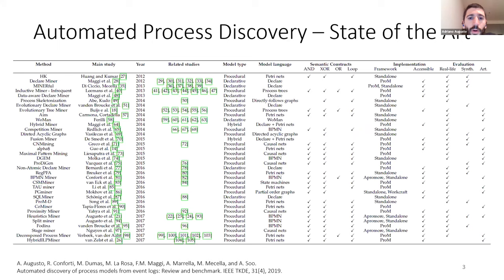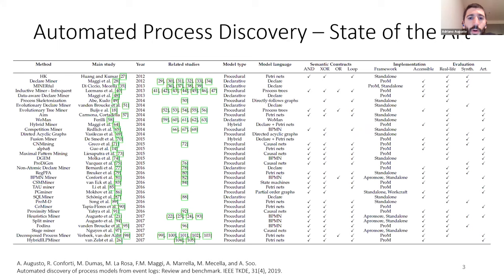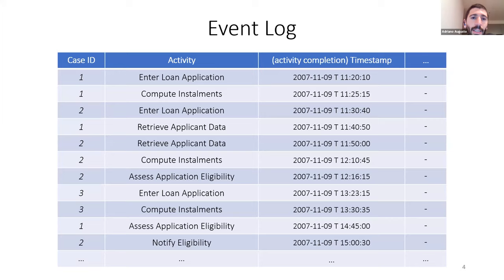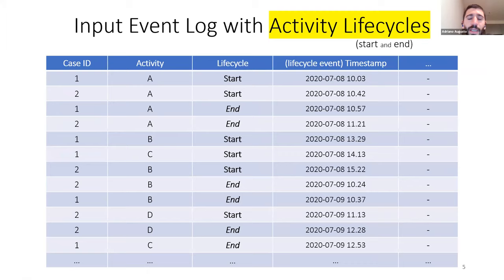Looking at the state of the art of automated process discovery, there's been really a lot of studies in the past years, but most of these automated process discovery algorithms consider as input a very simple event log — basically an event log with three attributes only: a case ID identifying the process execution, the activity within the process execution that has been executed, and the timestamp associated to the activity completion. However, event logs can have many more attributes, and one of the most common relates to the lifecycle of the activity, which captures how the activity is executed.